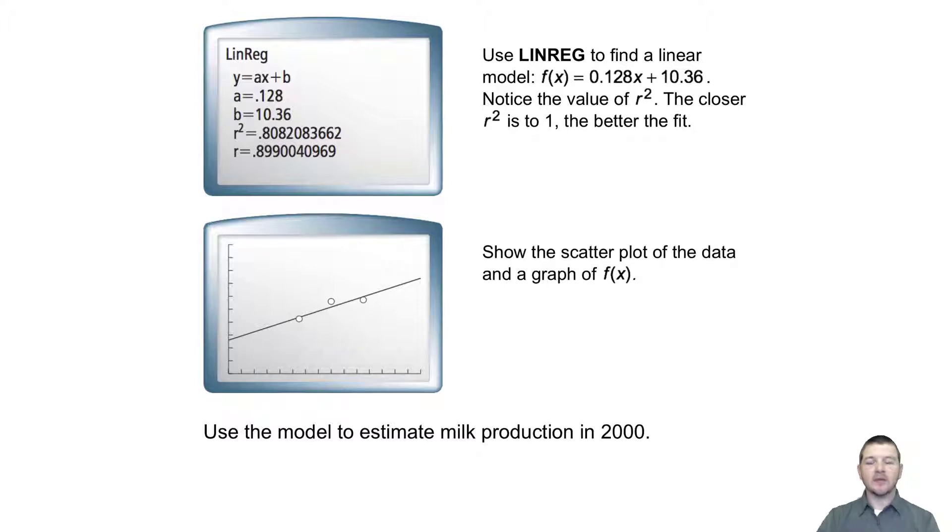2000 is 100 years since 1900. So we'll input 100 for x and evaluate f(100) = 0.128 times 100 plus 10.36, and that's approximately 23.2.